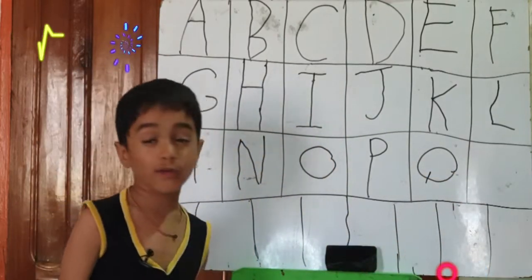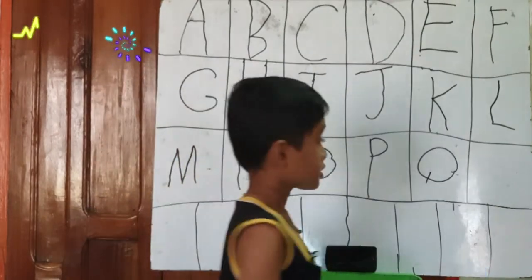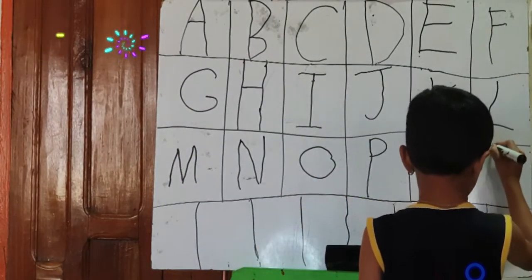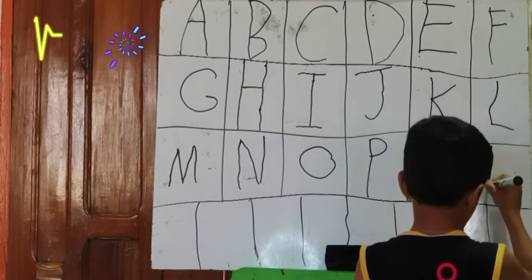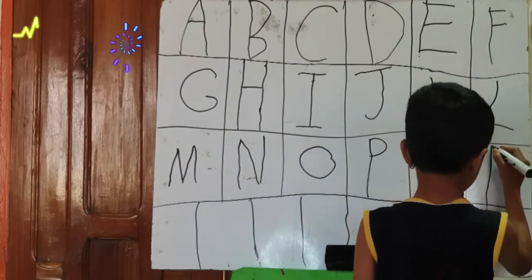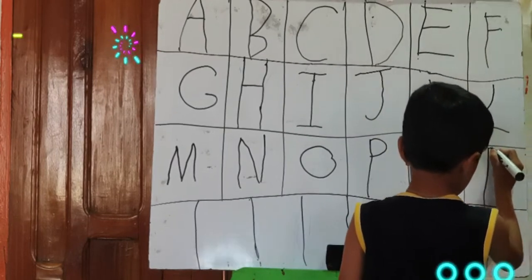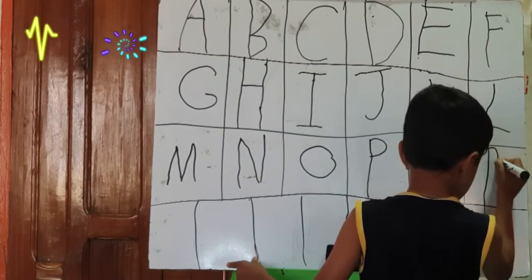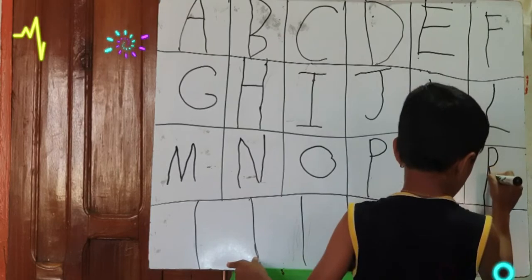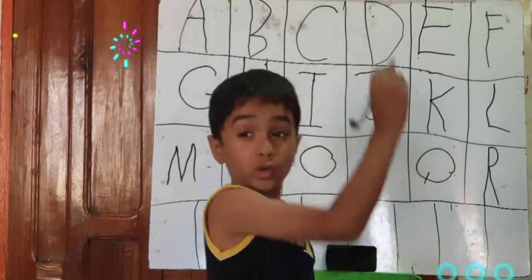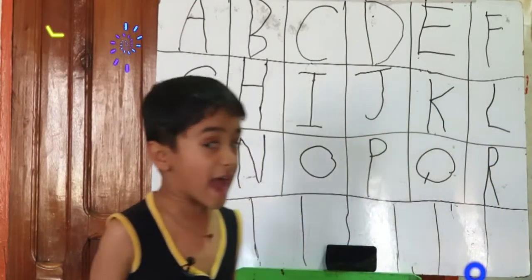Now we're learning R. One standing line, one circle, and one cross down.